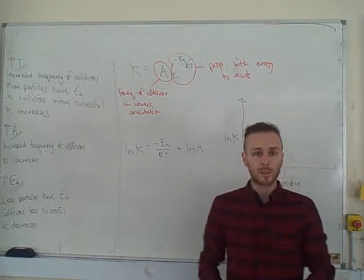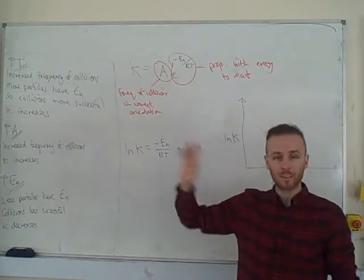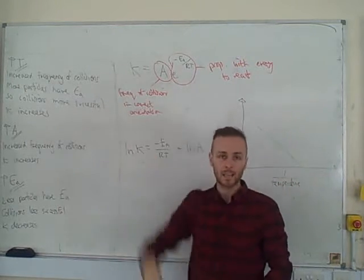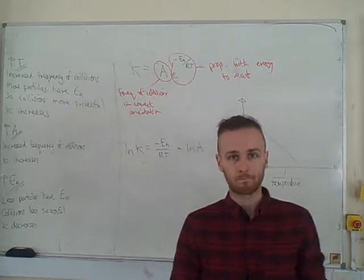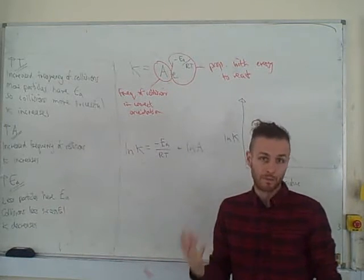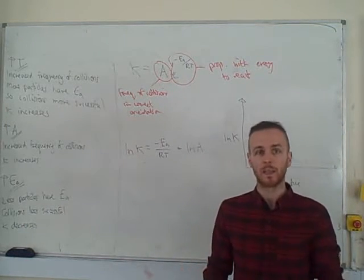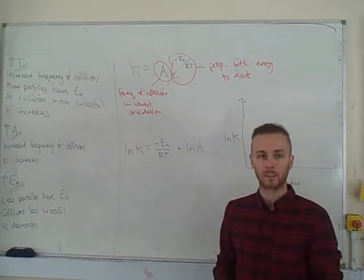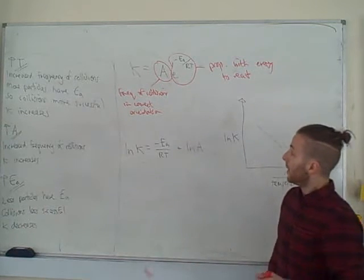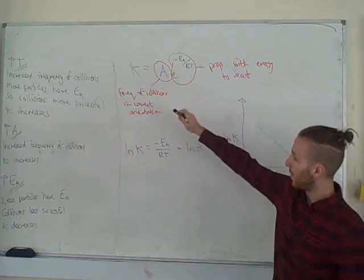So we've got those two terms there. When you bang them both together, they tell us about k, which is the rate constant. The larger k, the faster your rate tends to be, obviously depending on other factors as well. Bang all this together, we get k.